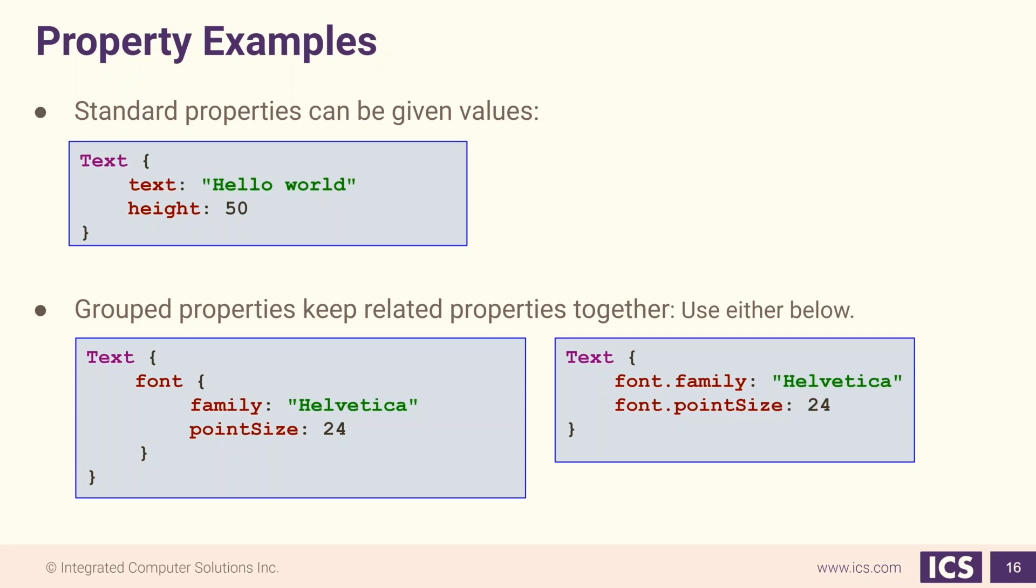Some properties are known as group properties. An example is the font for our text object. The font has its own properties like family and point size.